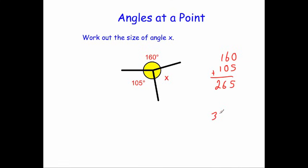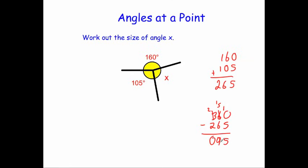So let's do 360 degrees minus 265 degrees. 0 take away 5 we can't do, so we're going to borrow 1 — cross that out, call it a 5, and call that a 1. Now we've got 10 take away 5, which is 5. 5 take away 6 we can't do, so we borrow again — cross off the 3, call it a 2, and now we've got 15. 15 take away 6 is 9, and 2 take away 2 is 0. So we get an answer of 95 degrees — X is 95 degrees.